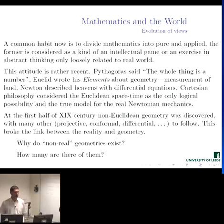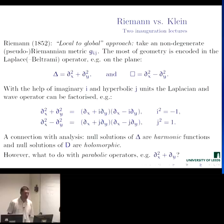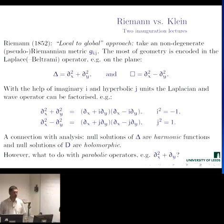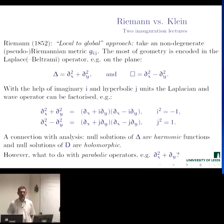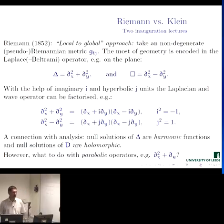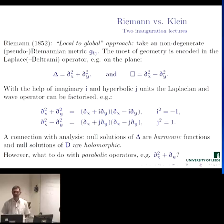Felix Klein proposed to classify geometry using group theory. At the same period of time, Riemann introduced his approach to geometry based on calculus — on derivative infinitesimal distances — so a construction of geometry from a local point of view, where we define an infinitesimal metric tensor, which may be Riemannian or Pseudo-Riemannian with definite sign, and there is a corresponding metric operator, the Laplacian operator.